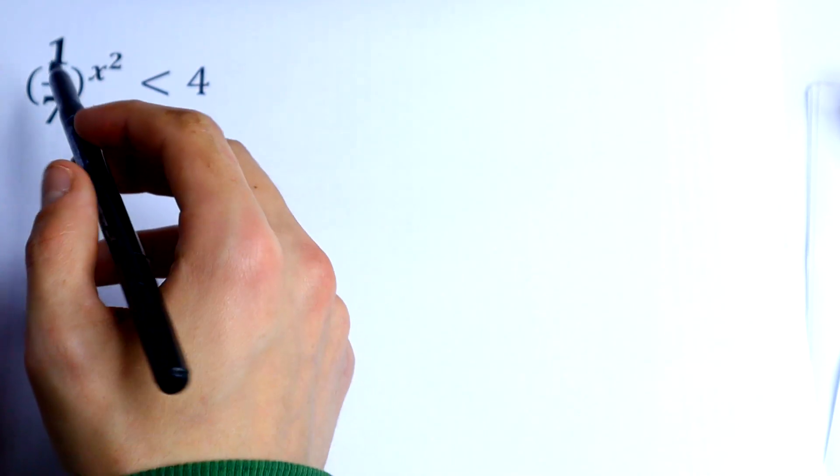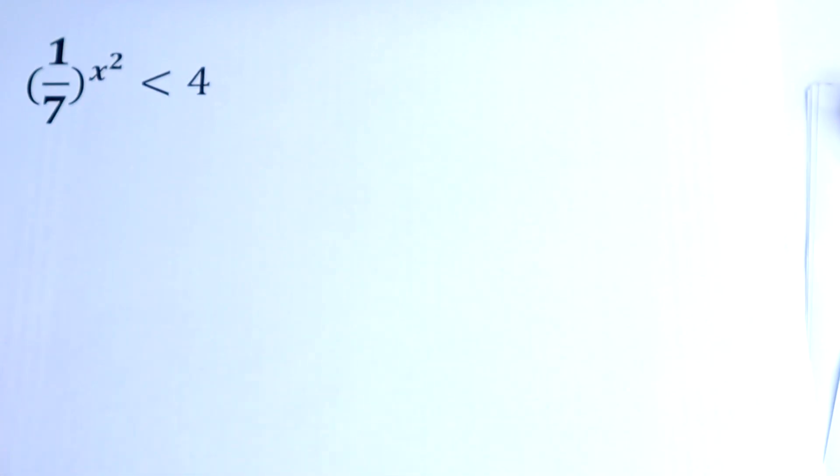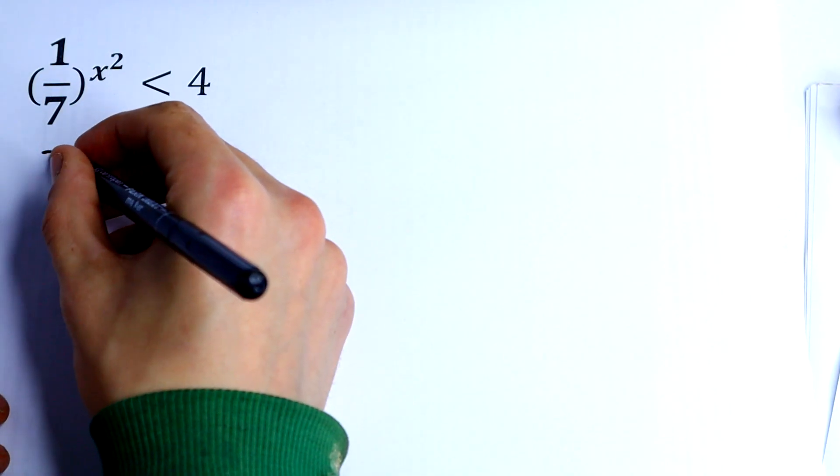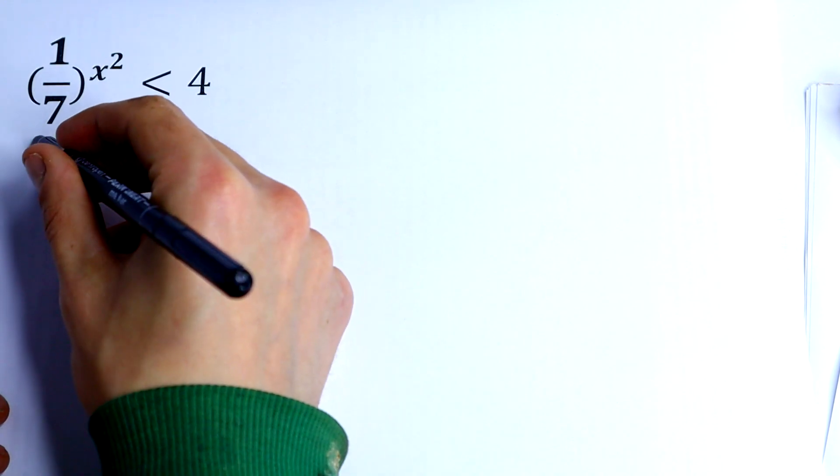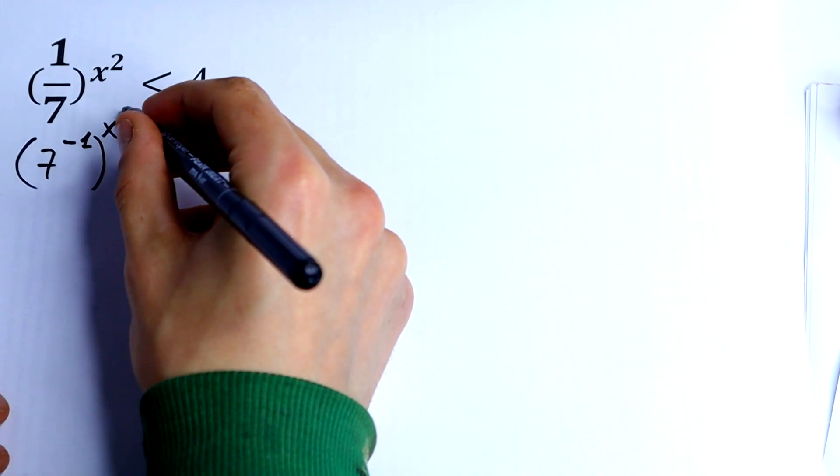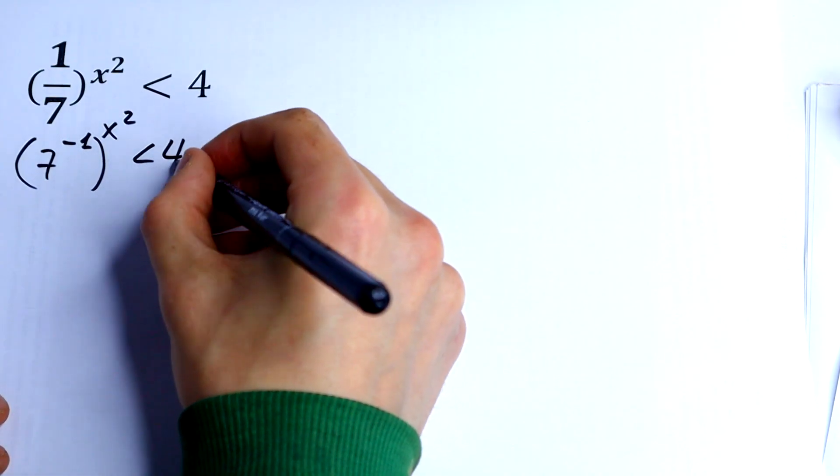First of all, I don't like this 1 over 7, so I can write it as 7 to the minus 1 power, and all raised to the power x squared is less than 4.